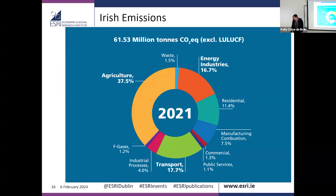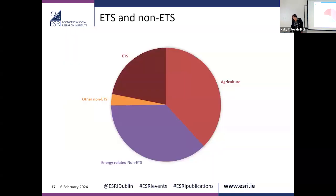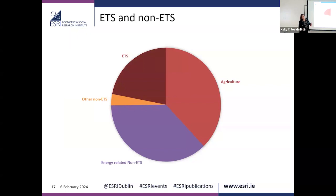Most emissions come from agriculture, then the usual suspects of transportation and energy. Looking at ETS versus non-ETS, the ETS share is around 20% of total Irish emissions. This is a unique case — a very low ETS share and a very high non-ETS profile.